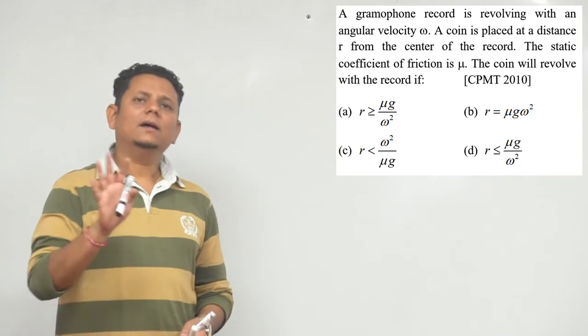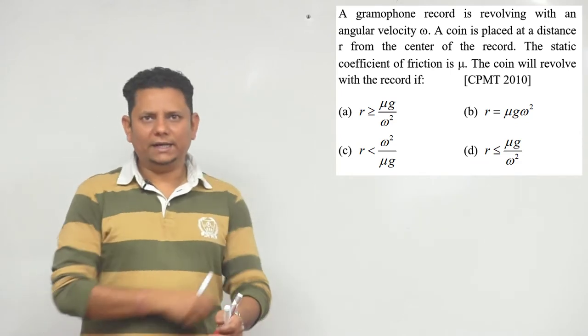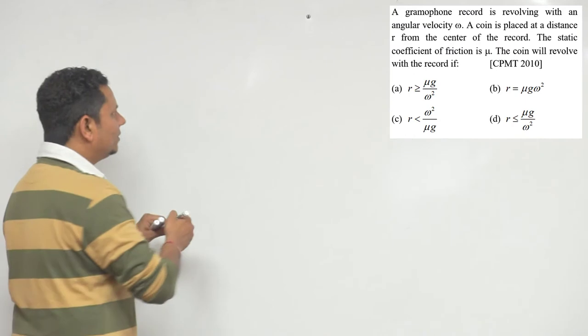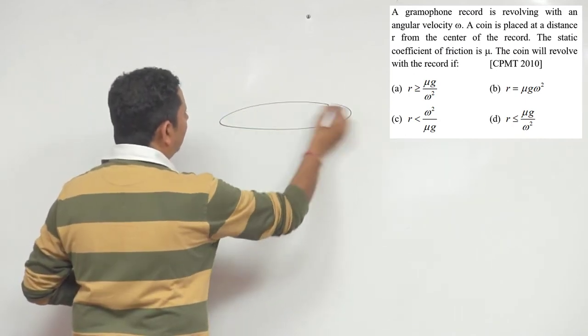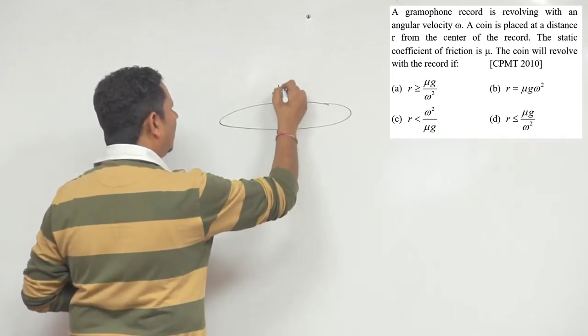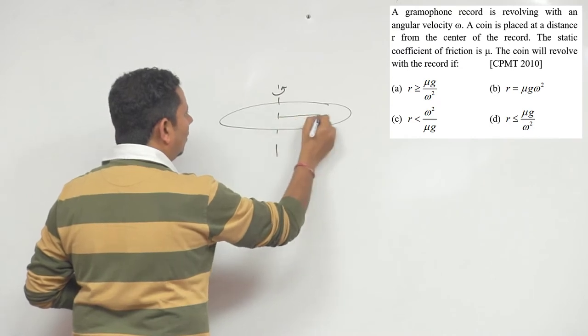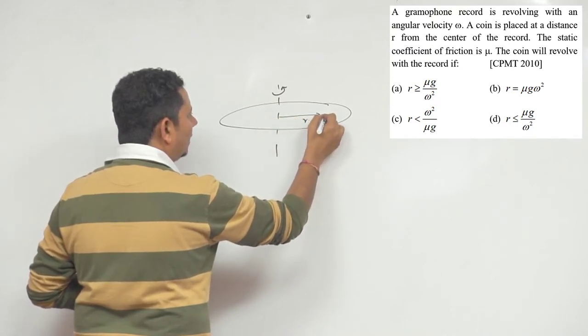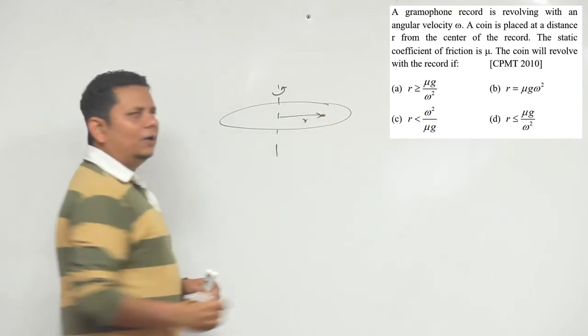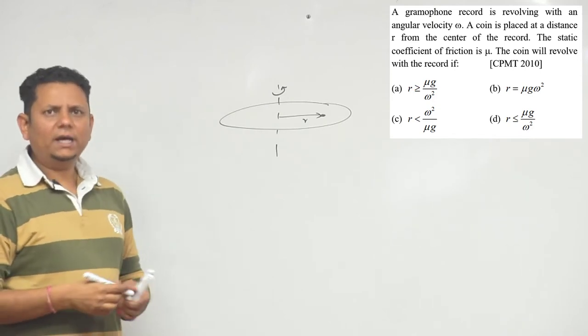The situation is: this is a gramophone record rotating with angular velocity omega. You place the coin at distance r, and the coefficient of friction is mu. We need to find the condition for the coin to rotate with the record.